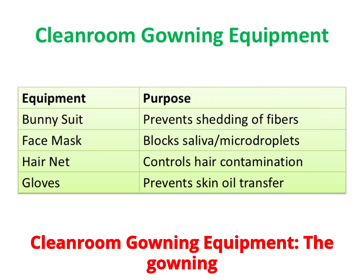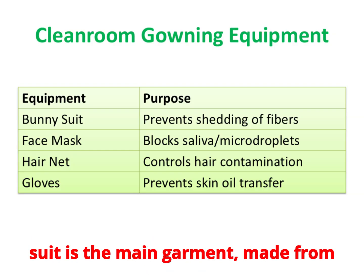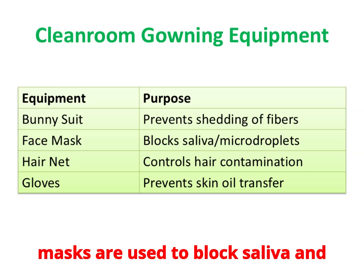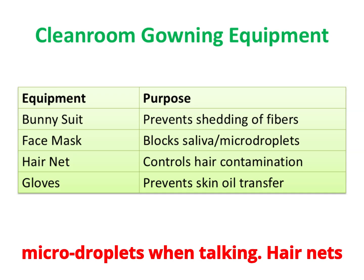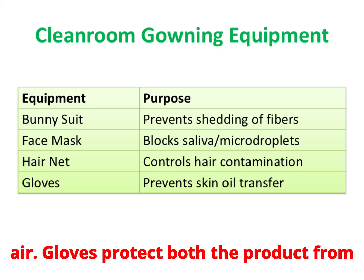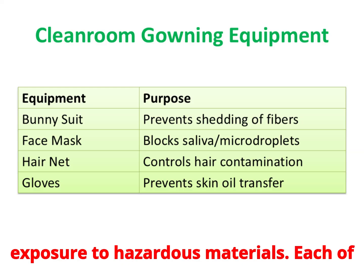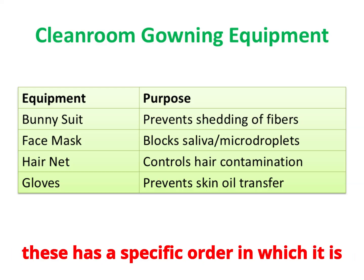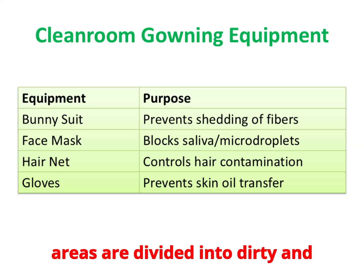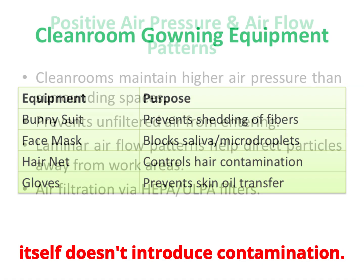The gowning process is very systematic. The bunny suit is the main garment, made from special non-linting materials that prevent fibers from escaping. Face masks block saliva and micro-droplets when talking. Hair nets prevent stray hairs from entering the air. Gloves protect both the product from our natural skin oils and us from potential exposure to hazardous materials. Each item has a specific order in which it is worn, and in many fabs, gowning areas are divided into dirty and clean zones so that the act of dressing itself doesn't introduce contamination.